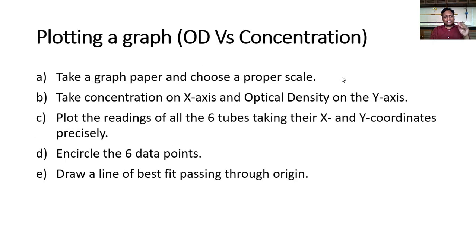After taking optical densities, now you have to plot a graph. This is for verification of Beer's Law. Take a graph paper. Choose a proper scale so that your readings and concentration will be accommodated in the given graph paper. The scale has to be mentioned on right upper corner of the graph paper. Remember, take concentration on x-axis and optical density on y-axis. Plot the readings of all six test tubes taking their x and y coordinates precisely. The data points have to be encircled. And draw a line of best fit passing through origin.